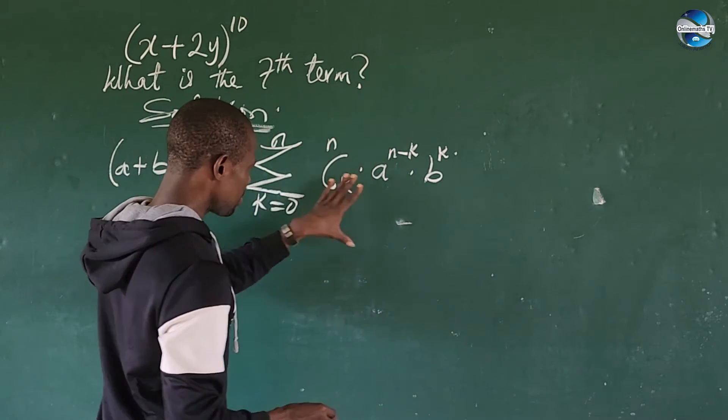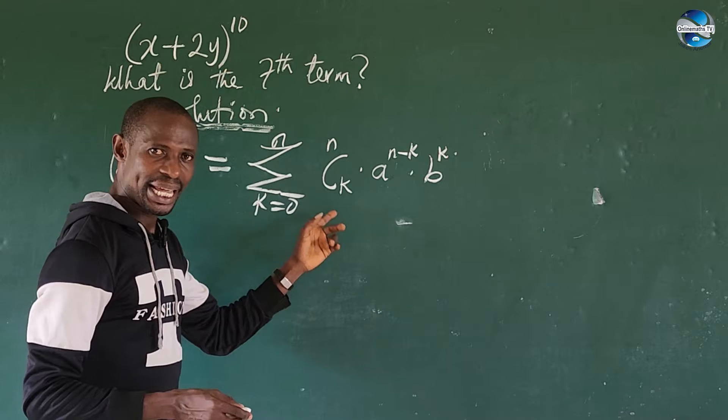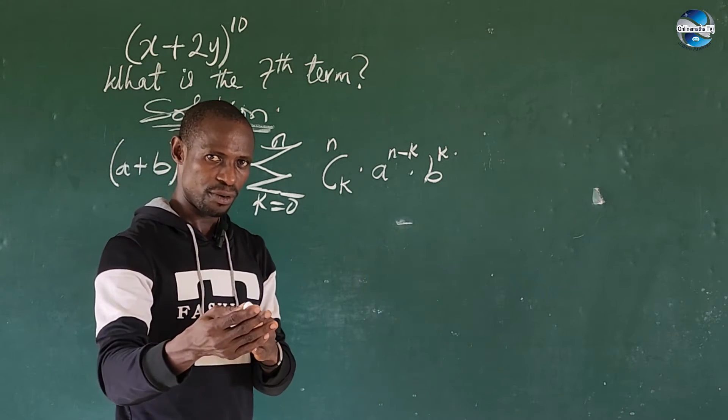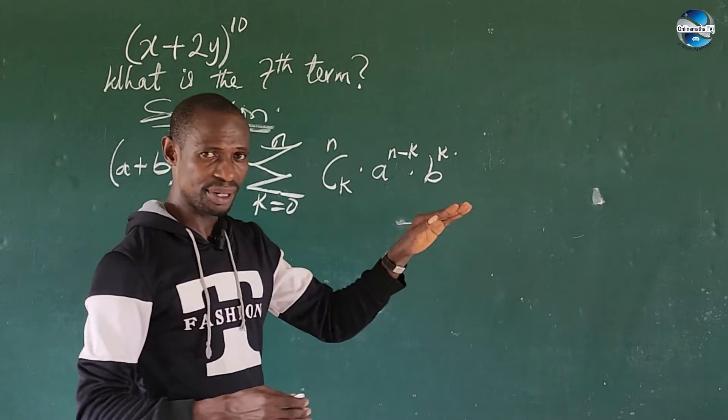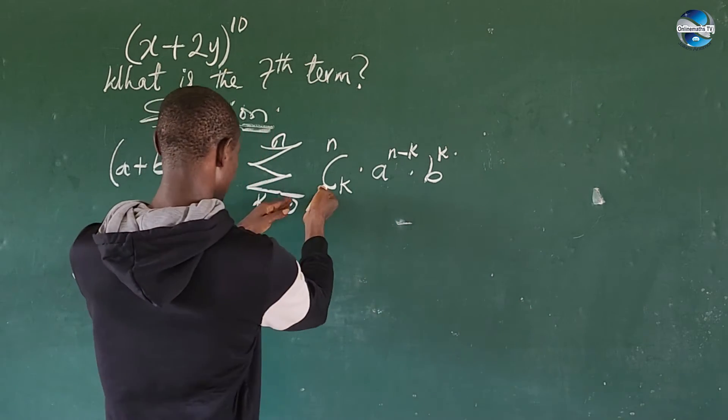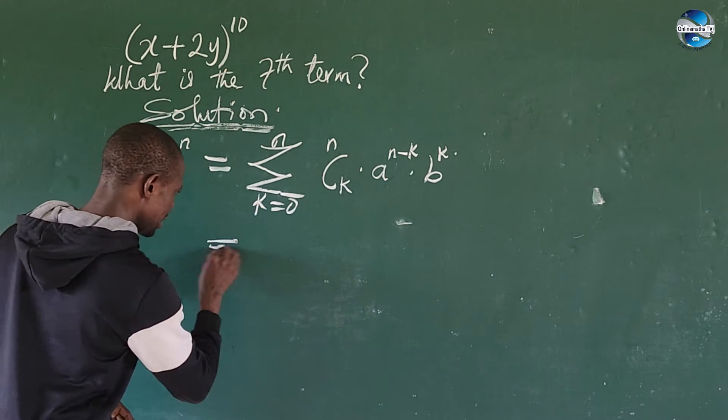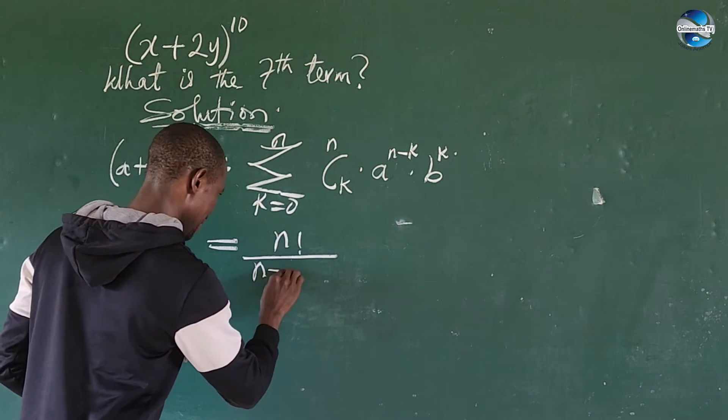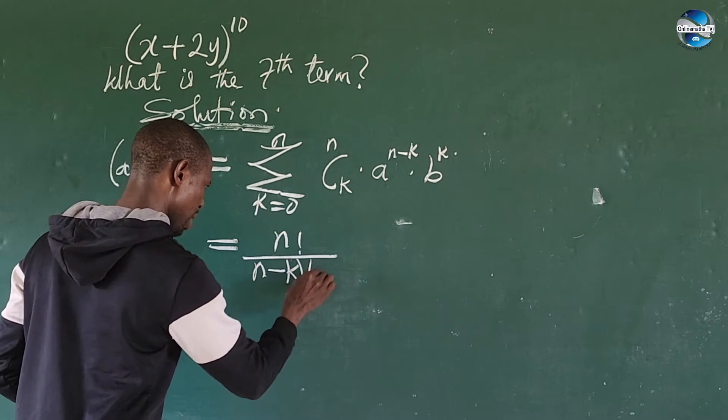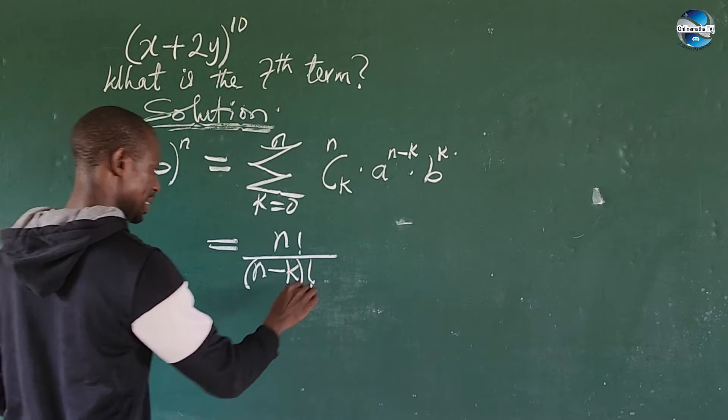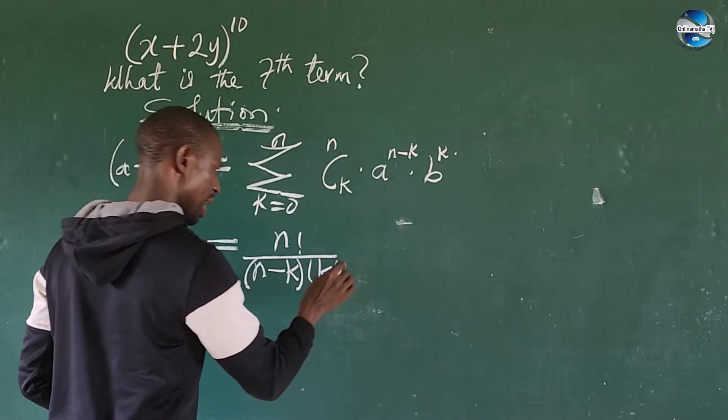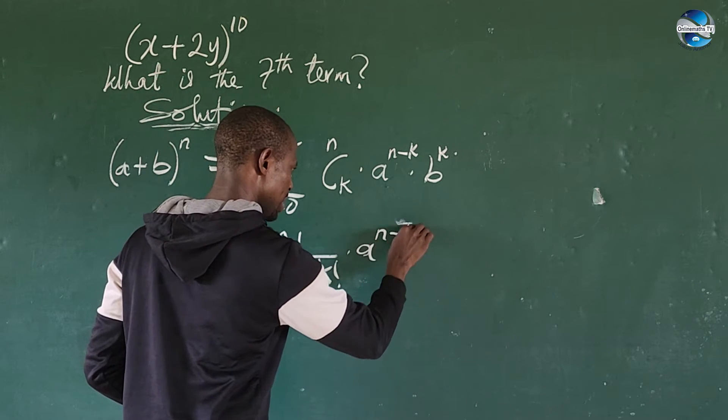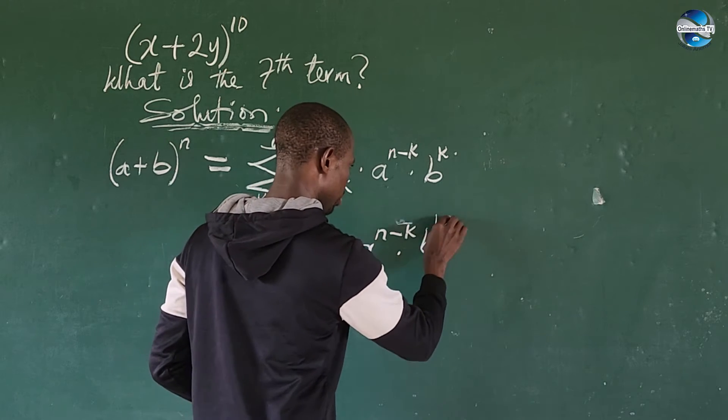Now we can rewrite this binomial theorem. So n combination of k, which is just a pattern used to get the coefficient of each of the terms we're going to have in this series or in the expansion, we can rewrite this as n factorial over (n-k) factorial times k factorial.